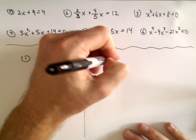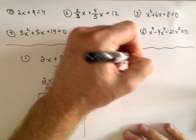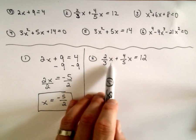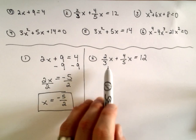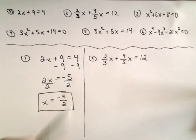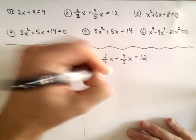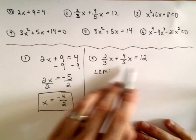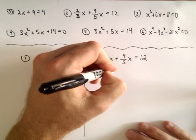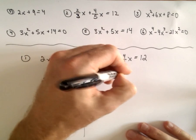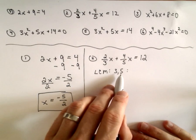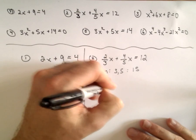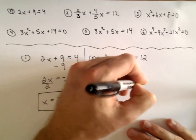Number 2: we've got 2/3 x plus 4/5 x equals 12. A couple of different ways you could do this — you could get common denominators on the left side to combine like terms. Another thing we can do is multiply by the least common multiple. The least common multiple of our denominators: we've got a denominator of 3 and a denominator of 5. The smallest number that both 3 and 5 divide into evenly is 15, so I'm going to multiply both sides of my equation by 15.